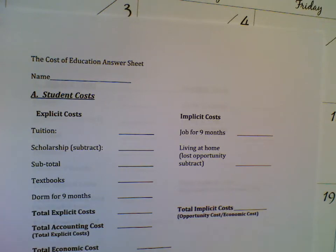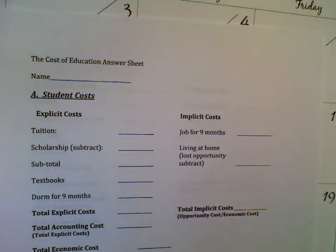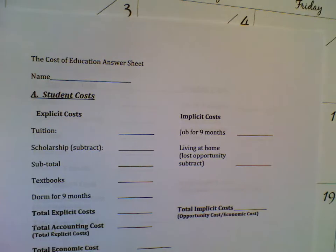Hopefully by now you've watched the videos, taken some notes, and you understand the difference between an explicit cost and an implicit cost — sometimes referred to as accounting costs and economic costs. An accountant is only going to look at the dollar amount, while an economist is always going to look at the opportunity cost. Explicit just means these are expenses or costs that you can write down and put a dollar amount on. An economist would tell you there are so many other costs and opportunities that you give up when you make a choice.